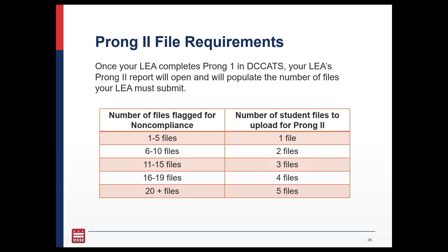Once your LEA completes prong one in DC-CATS, your LEA's prong two report will open and populate the number of files you need to submit. This chart provides the breakdown for how many files are required per number of files flagged for noncompliance.